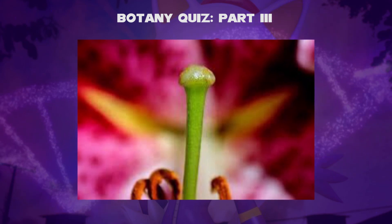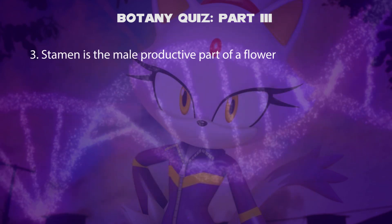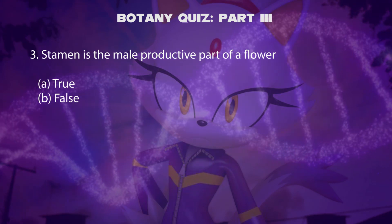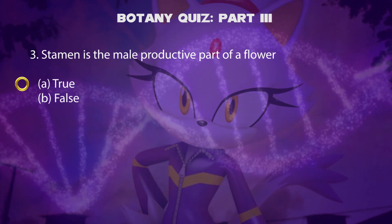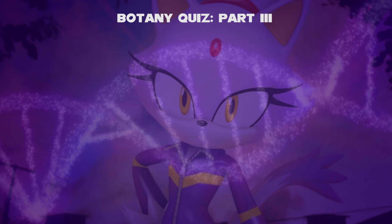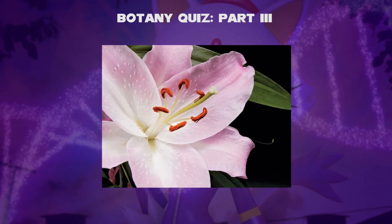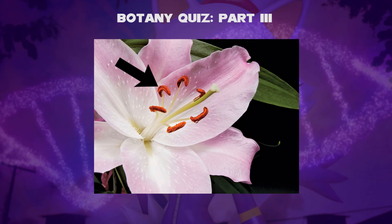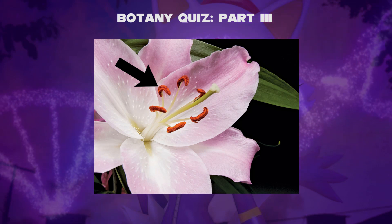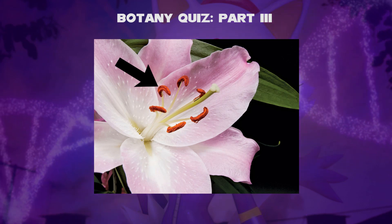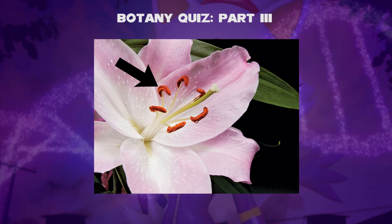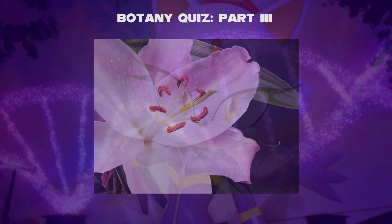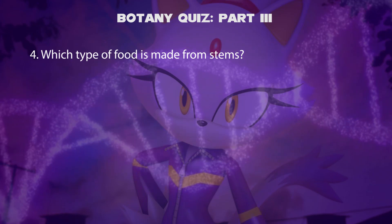Third question: the stamen is the male reproductive part of a flower — true or false? The statement is true. The stamen is the pollen-producing reproductive organ of a flower. It typically consists of a stalk called the filament and an anther, which contains microsporangia. Depending on the species of plant, some or all of the stamens in a flower may be attached to the petals or to the floral axis.